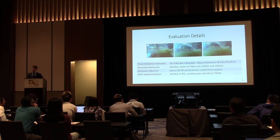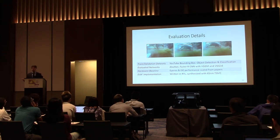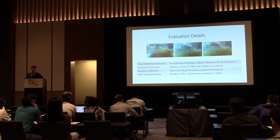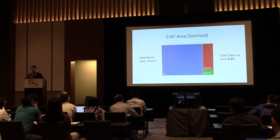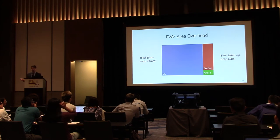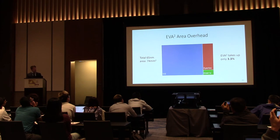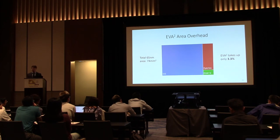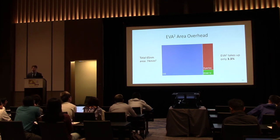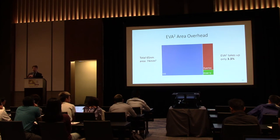EVA Squared has very low area overhead — very small relative to the overall system. This makes sense because we don't have particularly large buffers; the pixel buffers are significantly smaller than the model size. EIE is the vast majority of the area because it stores the model on-chip. IRIS is much smaller despite having significant logic. EVA Squared is an insignificantly small portion of the chip while still delivering major benefits.